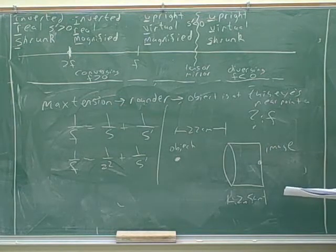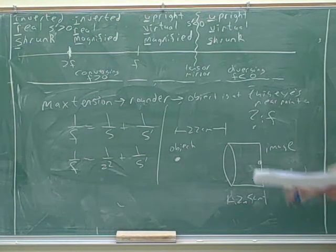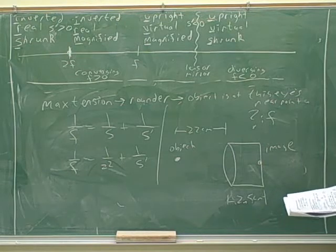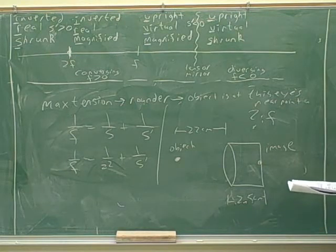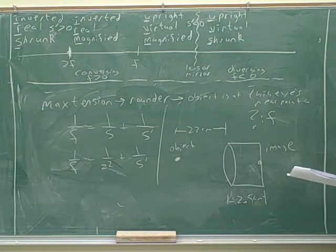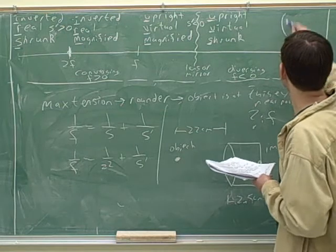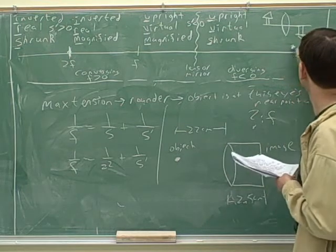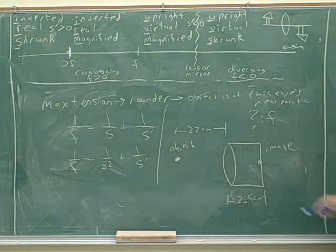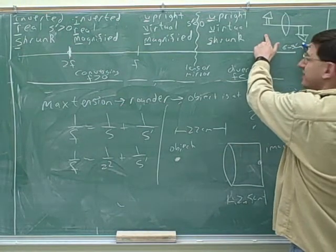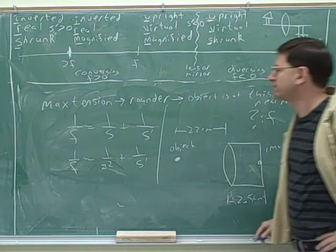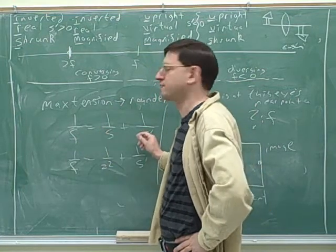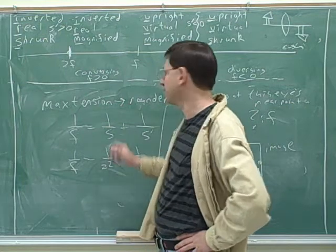Is it not 22 plus 2.5? S prime is the distance between what and what? What's the definition of S prime? It's the image distance. But it's the image's distance from the lens or mirror, right? Whenever we draw our pictures, we always said S prime is this distance. We didn't say S prime was the distance between here and here. So, to define these terms better: F is how far the focal point is from the lens or mirror, S is how far the object is from the lens or mirror, and S prime is how far the image is from the lens or mirror - not how far the image is from the object.